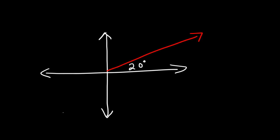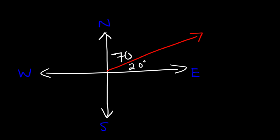Let's try another example. An object is moving in this direction, and you're given an angle of 20 degrees. We shouldn't use that 20 degree angle — we want the angle between the direction line and the north-south line. The 20 is between the direction vector and the east line, which we don't want. So this angle has to be 90 minus 20, which is 70, because the angle between the north and east lines is always 90. So the bearing is north 70 degrees east.